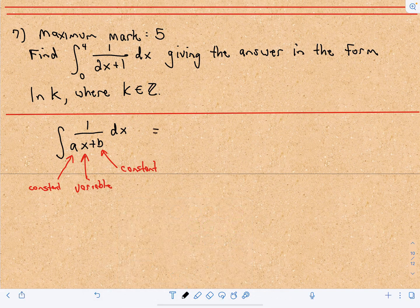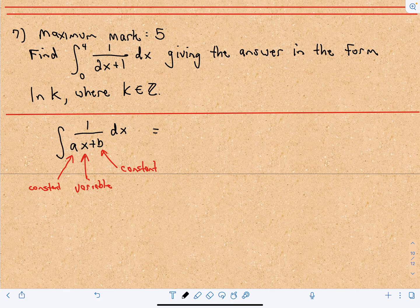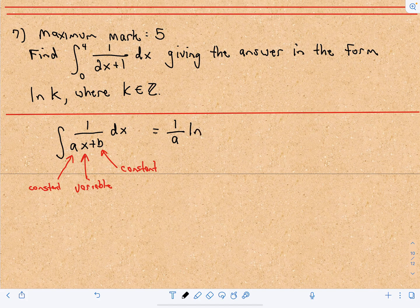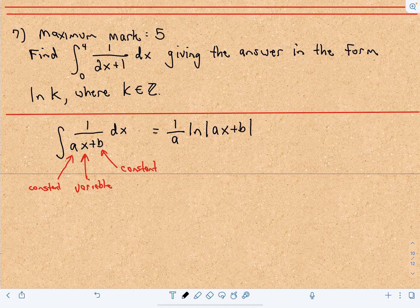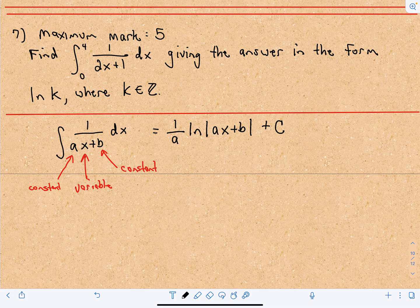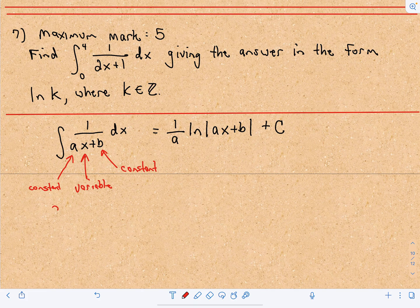So what you need to know - and I think this is just a formula you're expected to know - is that if you evaluate this indefinite integral, you get 1 over a times the natural logarithm of the absolute value of ax plus b. And remember, for indefinite integrals, you always have to add plus C. This is the formula they expect you to know.